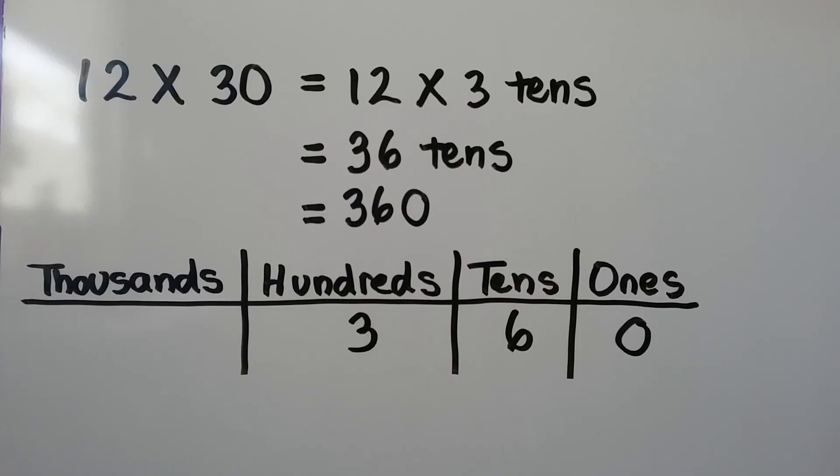12 times 30 is 12 times 3 tens. That's 36 tens, or 360. We can look at the 36 tens as 300s, 6 tens, and 0 ones, which equals 36 tens.